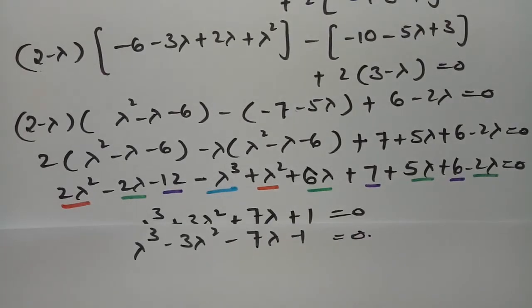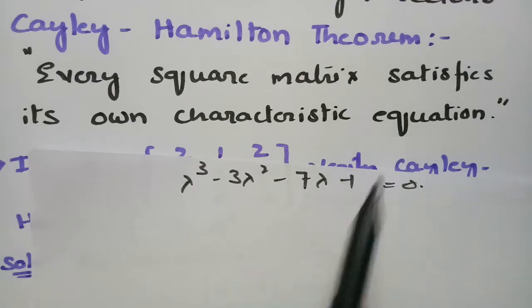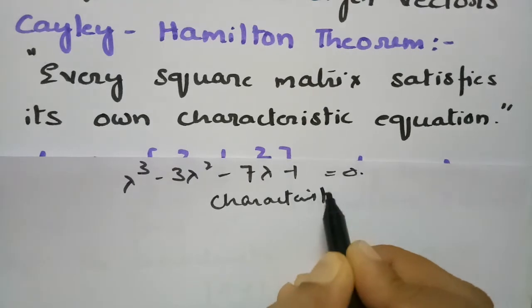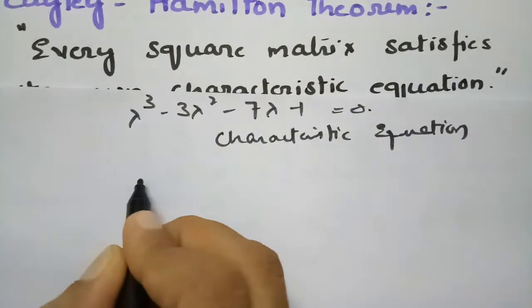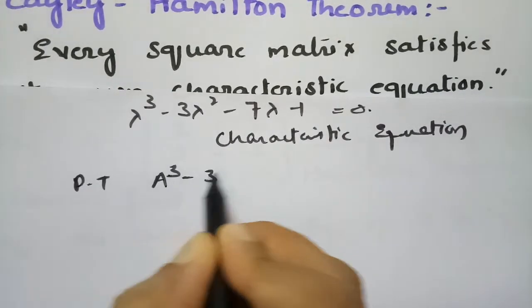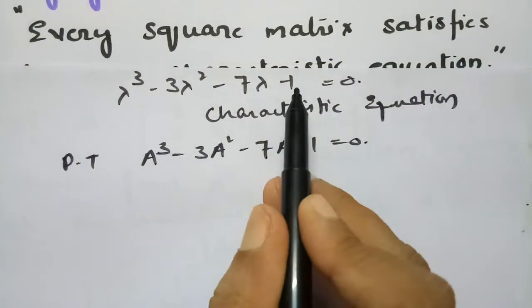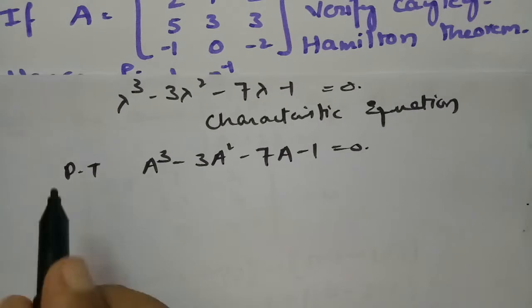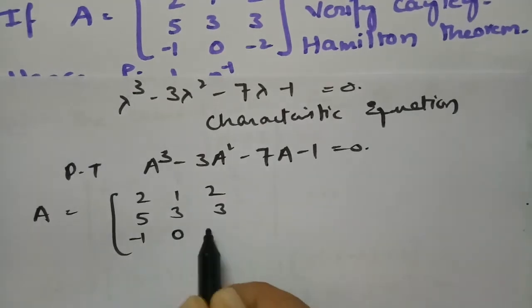So the characteristic equation is lambda³ minus 3 lambda² minus 7 lambda minus 1 equals 0. By Cayley-Hamilton theorem, every square matrix satisfies its own characteristic equation. The matrix A is given as: [2, 1, 2; 5, 3, 3; minus 1, 0, minus 2].